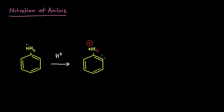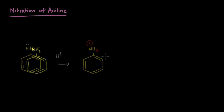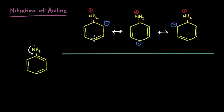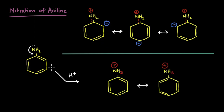The H+ reacts with the lone pair on nitrogen of aniline to form the anilineum ion, and it is the formation of this ion that determines which products are formed. Going back to our resonance structures: in aniline, the lone pair activates the ring giving higher electron density at ortho and para. But once the anilineum ion forms, there is no lone pair available — so there is no increased electron density at the ortho and para positions, which partly explains why we did not get the products as expected.